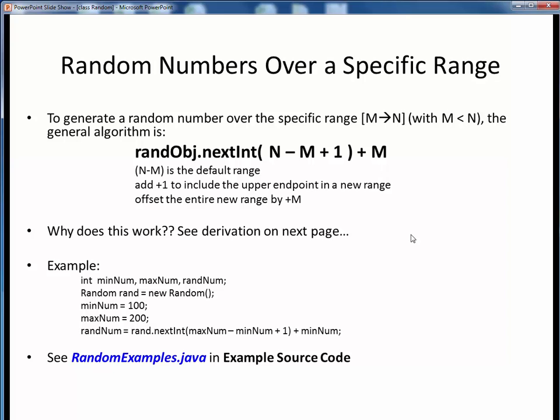At this point, I'd encourage you now to pause for a moment and view the short code walkthrough video for RandomExamples.java. This example will show how to prompt for these minimum and maximum values and use them to generate a random number. You'll find this example in the usual place. Come back to this video when you are finished.